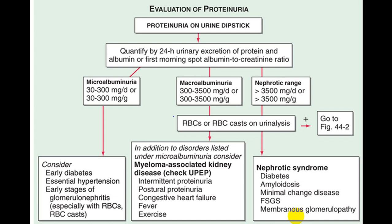Macroalbuminuria ranges from 300 to 3000 milligram. If there is no RBC or RBC cast, you investigate for renal damage — including multiple myeloma, intermittent or postural proteinuria, congestive heart failure, diabetes, amyloidosis, minimal change disease as in nephrotic syndrome, or membranous glomerulonephropathy. In those cases, renal biopsy may be needed to confirm the diagnosis.